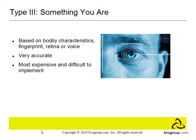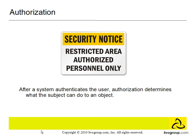The second security service is authorization. For those studying for the CISSP exam, you have to remember that authentication precedes authorization. So after a system authenticates the user, authorization determines what the subject can do to an object.